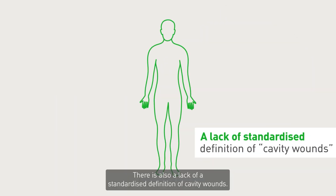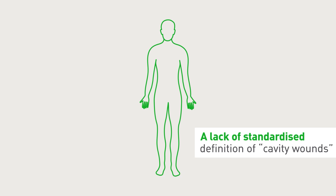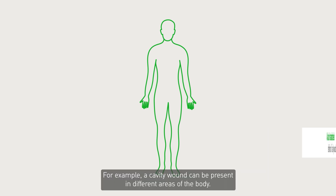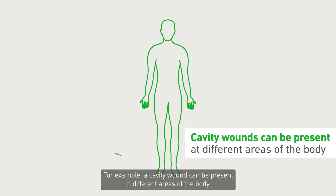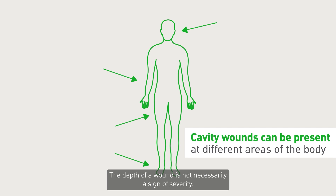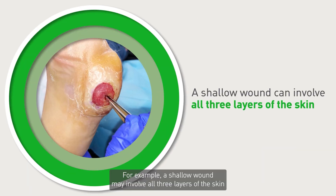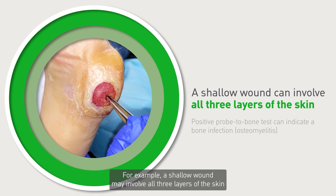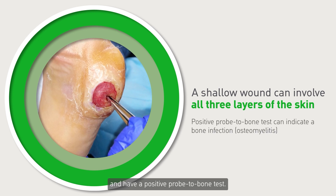There is also a lack of a standardized definition of cavity wounds. For example, a cavity wound can be present in different areas of the body. The depth of a wound is not necessarily a sign of severity. For example, a shallow wound may involve all three layers of the skin and have a positive probe-to-bone test.